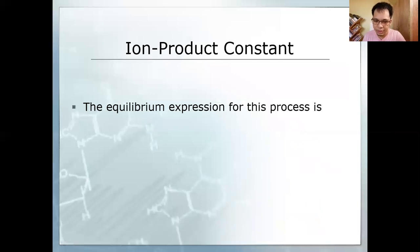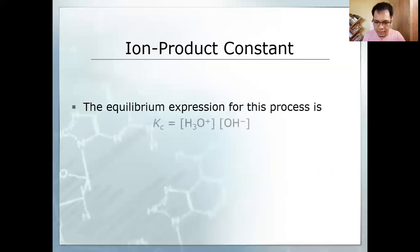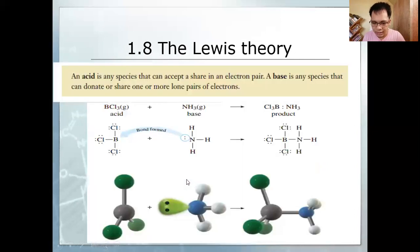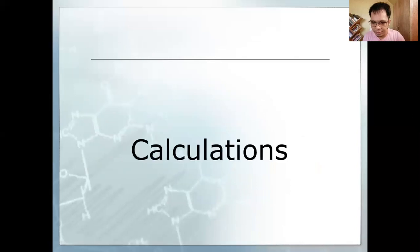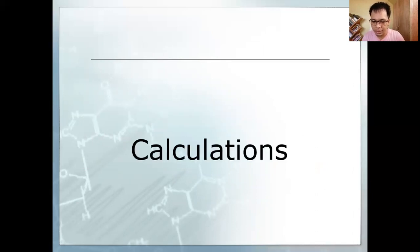The ion product constant of water, as we have seen here, is KW at 25 degrees Celsius. KW is 1.0 times 10 raised to negative 14. The power point is reversed, I will edit it later for your handout. For the calculations part, we will tackle that in part three of our lecture. That's it for lecture part one. Thank you very much for listening and have a nice day.